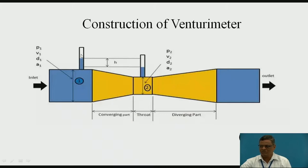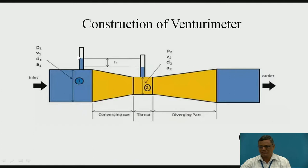We have piezometers at two locations: one at the first section where the diameter equals the original pipe diameter, and one at the throat. We can observe the difference in levels — at the throat, where the cross-section area is smaller, velocity increases and pressure decreases, so the piezometer level at the throat is lower. The sections are labeled: pressure P1 and P2, velocity V1 and V2, diameter D1 and D2, and cross-section area A1 and A2.